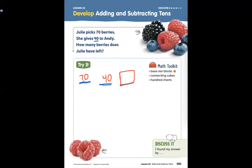She has 70, she gives 40 away. So what does that mean we're going to do? Right, we are taking away. 70 minus 40 equals blank.